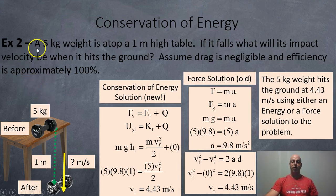Okay, so example two. Five kilo weight is atop a one meter high table. Atop just means on top of. I'm trying to bring the word back into use. If it falls, what will the impact velocity be when it hits the ground? Now, assume drag is negligible and the efficiency is approximately 100%. So here we've got our five kilogram dumbbell, and this is where it is going to be beforehand. Five, one meter off the ground, and then later it's going to fall off and hit the ground at how many meters per second? So this is after. So before and after. And the force of gravity is going to do all the work.